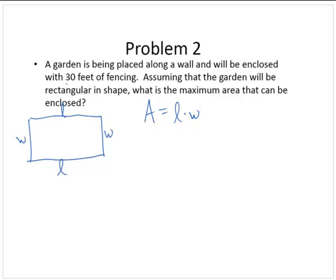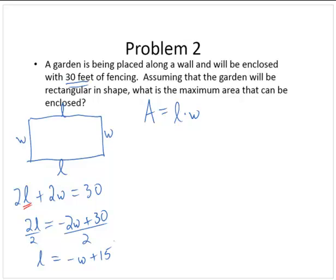Well I know that since this is a rectangle and I have 30 feet of fencing that 2L + 2W = 30. So what I'm going to do now is I'm going to solve for L in terms of W. I'm going to use that to replace the L in my area formula and that will give me a function in terms of W. So subtracting 2W I have 2L = -2W + 30 and dividing by 2 I have L = -W + 15.